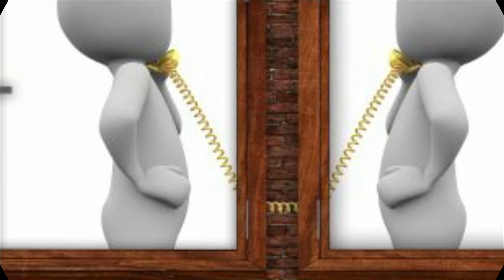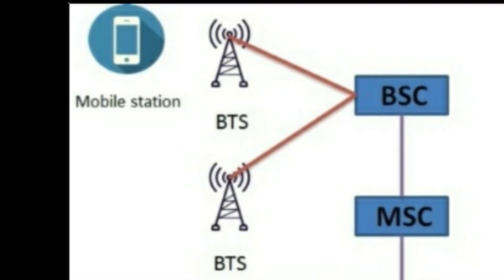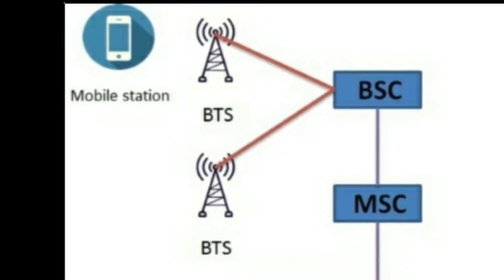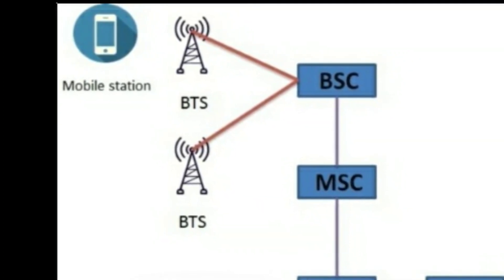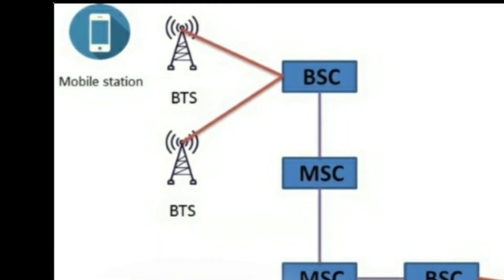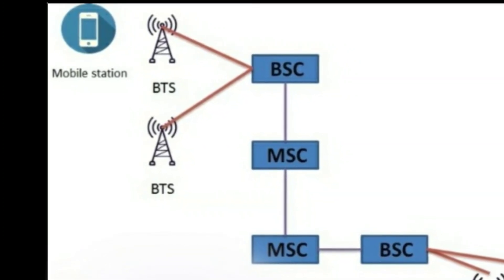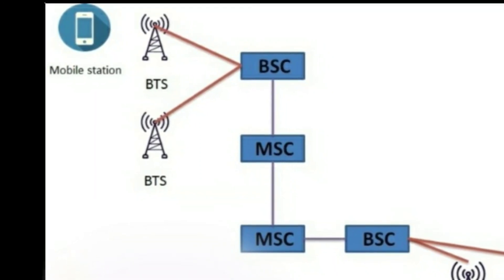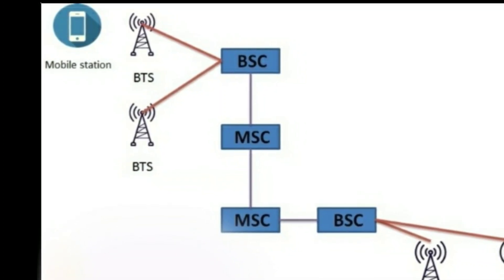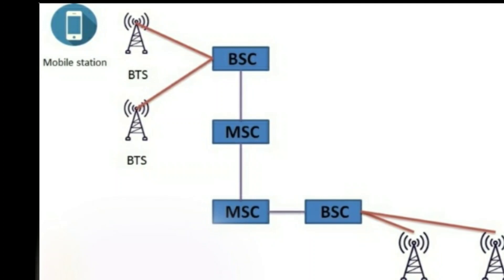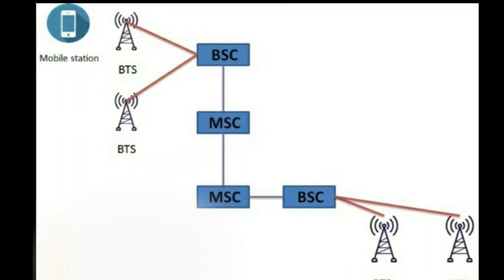Guys, this is where we have the cellular communication caller and receiver. We make a call — that call goes to BTS. BTS passes the information to BSC. You pass the message to the location, and pass the number. Then the BSC passes the message to the MSC. From here, the MSC passes it on further to the destination BSC.